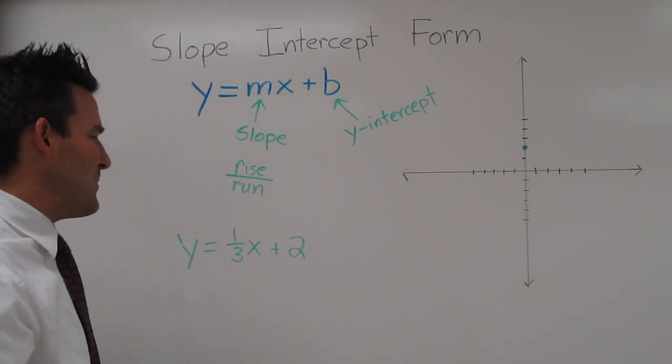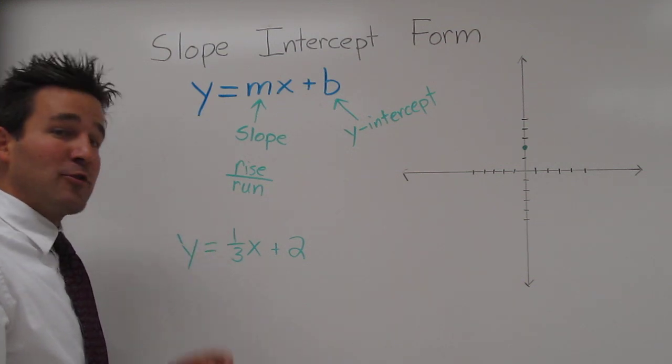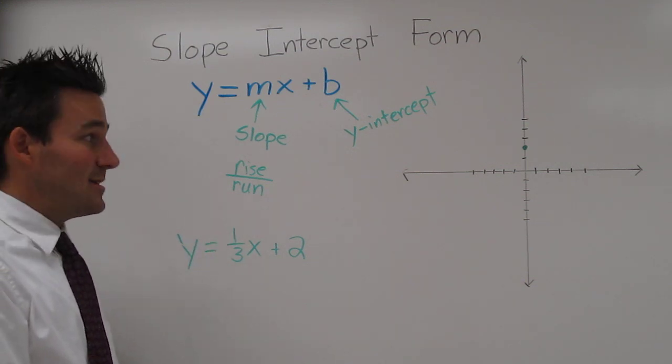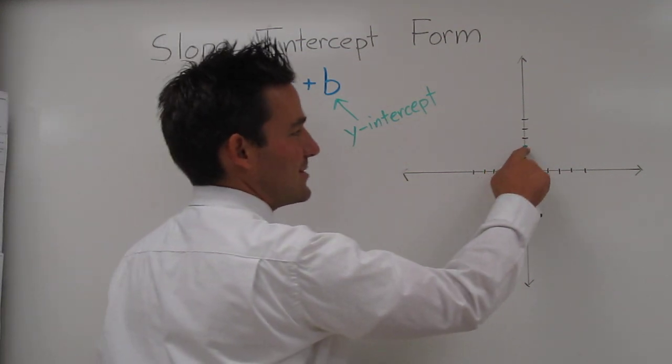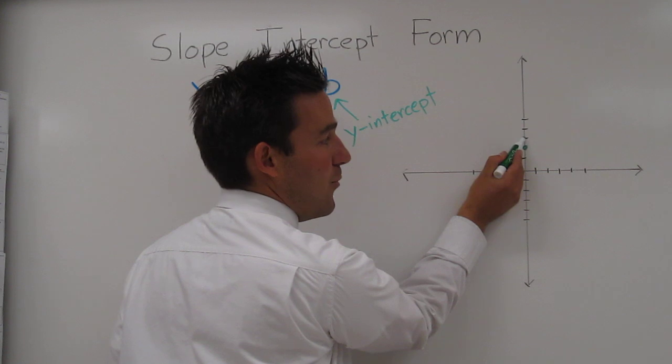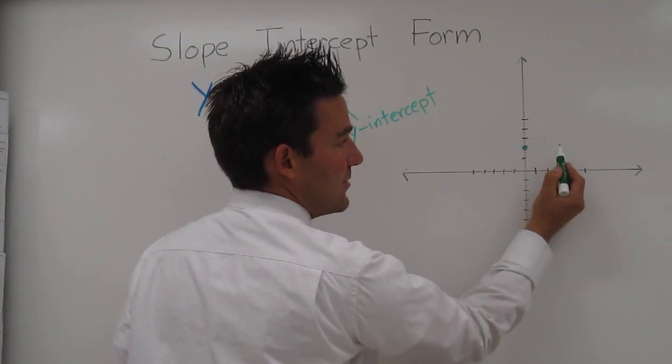Now, let's use the slope. If the line rises 1 unit for every 3 units it runs, let's start from the intercept and see where it goes. We're going to rise 1, so up 1, and over 3 units. 1, 2, 3.